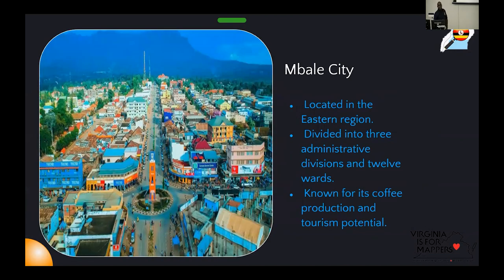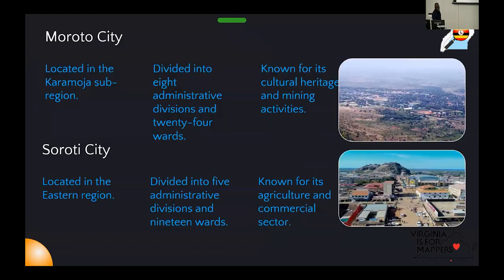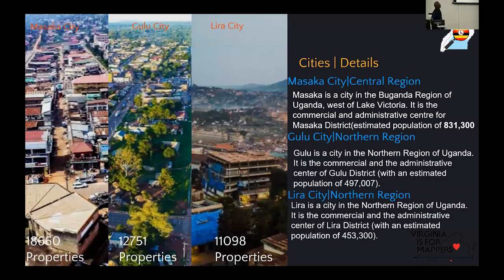We have Mbali City in eastern Uganda, which has three divisions and 12 wards, known for its crop production, and the Elgon Mountain is within this city. We have Mbali City in north-eastern Uganda, where we have the Karamoja region that cuts across Kenya, and then Soroti City in eastern Uganda. These were the cities we handled for our project.